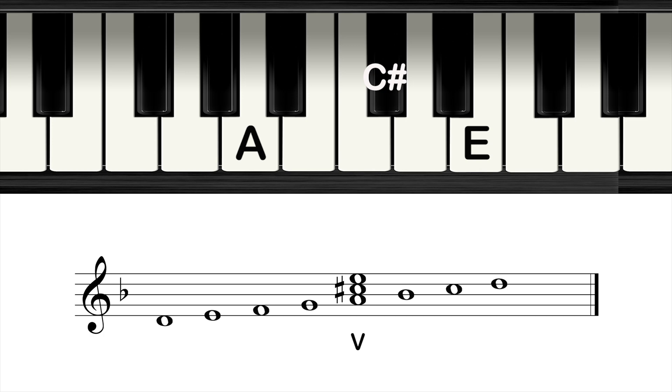By raising the seventh degree of the scale, the harmonic minor also contains two other chords not in the natural minor. One is the augmented three chord. The other is the diminished seven chord.